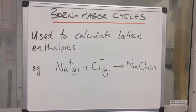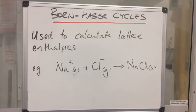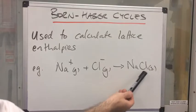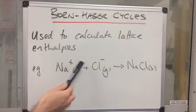In this video I'm going to look at Born-Haber cycles. Born-Haber cycles are used to calculate lattice enthalpy. I've got an example on the board. This is the equation that accompanies the lattice enthalpy for sodium chloride. Lattice enthalpy is defined as the enthalpy change when one mole of a solid ionic lattice is formed from its gaseous ions.